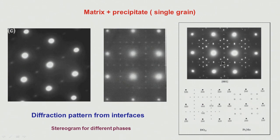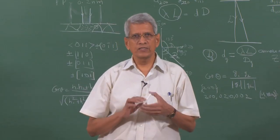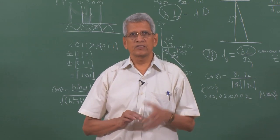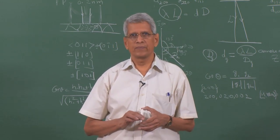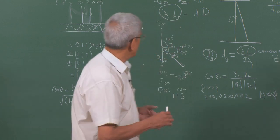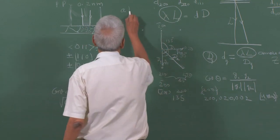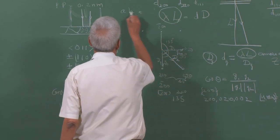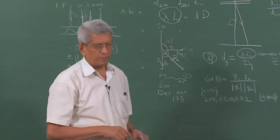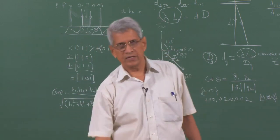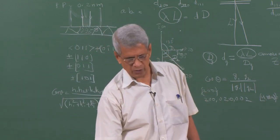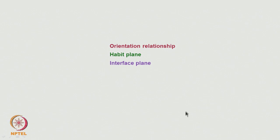For non-cubic phases, standard stereograms are not readily available. Once you know the lattice parameters a, b, and c — as mentioned in the class on stereograms — you can construct a stereogram corresponding to various poles for those phases, and those stereograms can be used to index the patterns consistently.